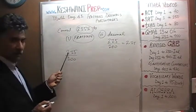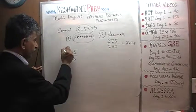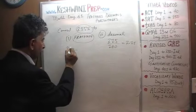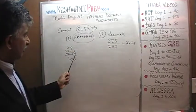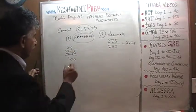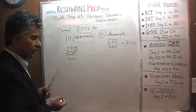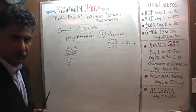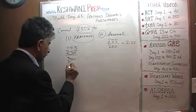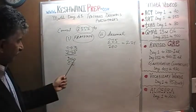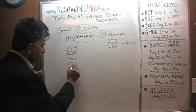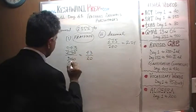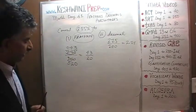How many 5 does 2 have? 2 has no 5. The 2 goes and joins the 1 becomes 21. 21 has 4 fives. The remaining 1 goes and joins the 5 becomes 15 and 15 has 3 fives. How many 5s does 1 have? 1 has no 5. 1 goes and joins the 0 becomes 10. 10 has 2 fives. How many 5 does 0 have? 0 has no 5. We end up with 43 over 20.